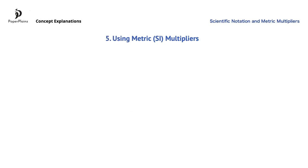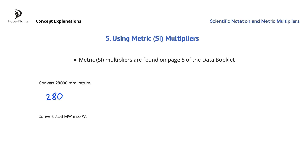Let's see how metric multipliers are used. Just a quick note that metric multipliers are found on page 5 of the data booklet, so there's no need to memorize them. We'll start by writing down 28,000. Milli stands for 10 to the power of negative 3, so here we get a multiplication by 10 to the power of negative 3. We have to move the decimal point from the end of the number 3 places to the left, which gives us 28 meters.